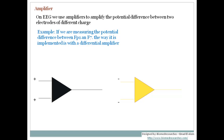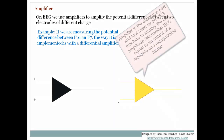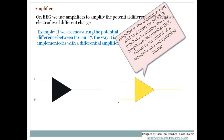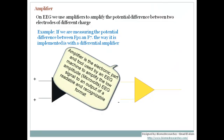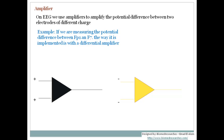Now let us start by understanding what are the amplifiers. The main important component of an EEG machine is the amplifier, and from the name we can understand that an amplifier is a piece of equipment which amplifies the signal. To understand how the amplifier operates, we will learn first what type of amplifiers we use in EEG. In EEG generally, we use a differential amplifier.